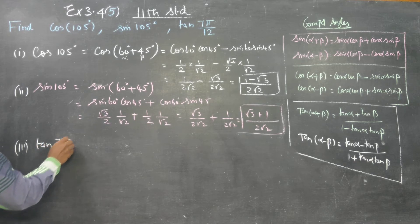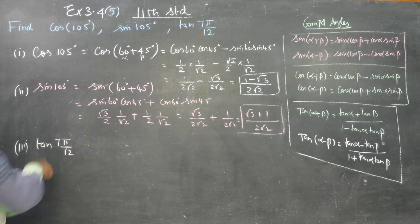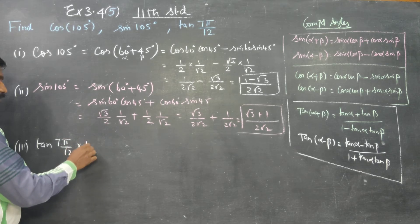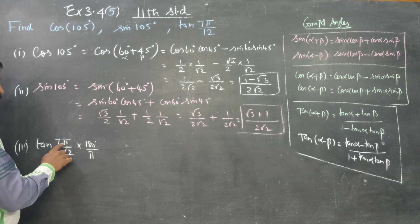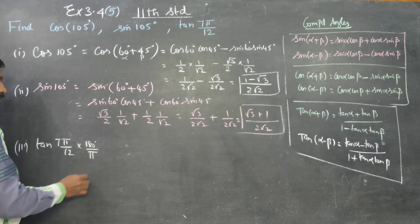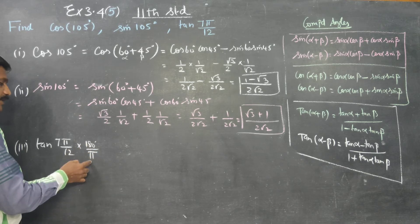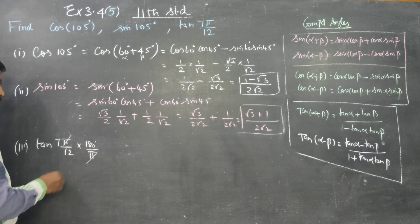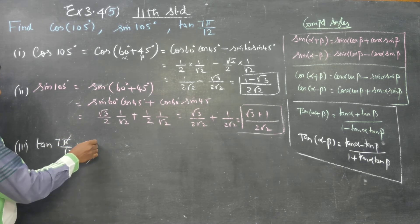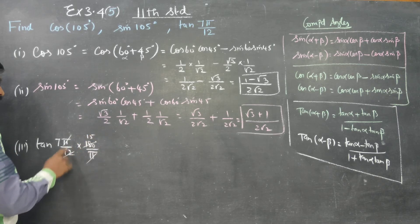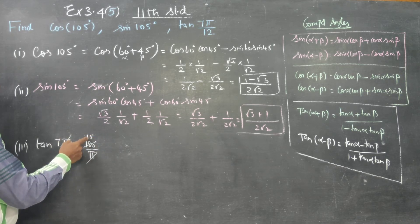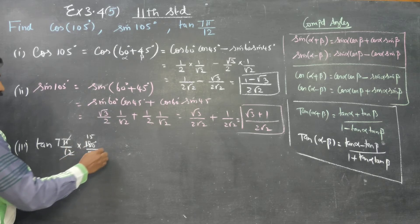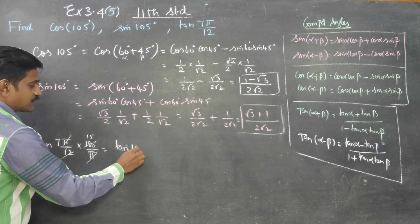Now, tan(75π/12). This is a radian measure. To convert radian to degrees, multiply by 180°/π. Pi and pi cancel; in the 12 times table, 15 times cancels. So 7 × 15 = 105. Our answer is tan 105°.